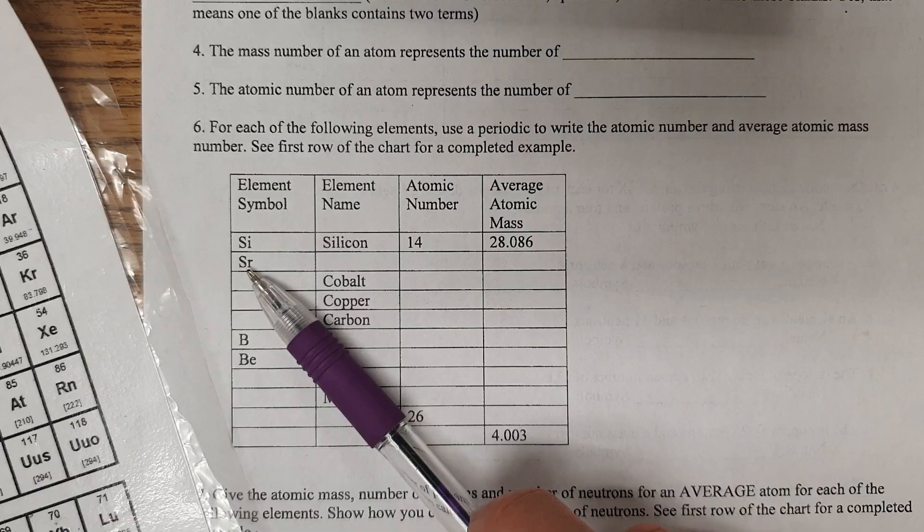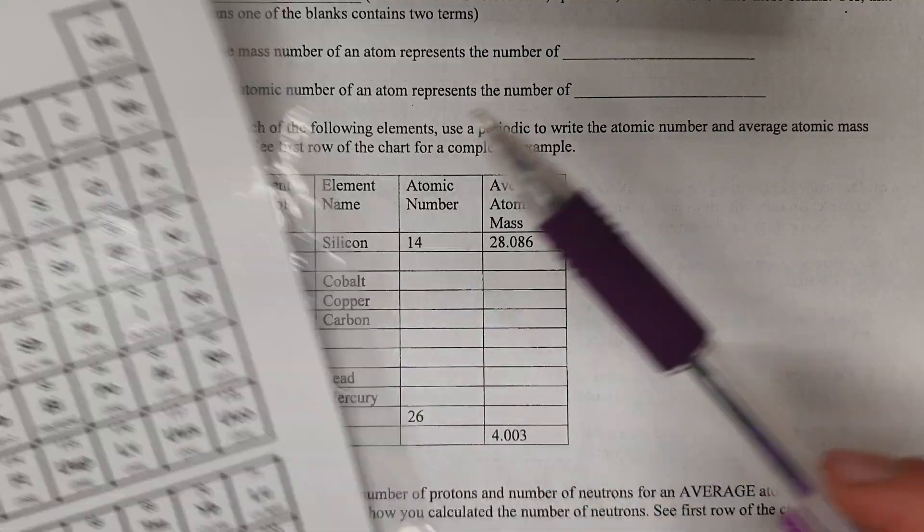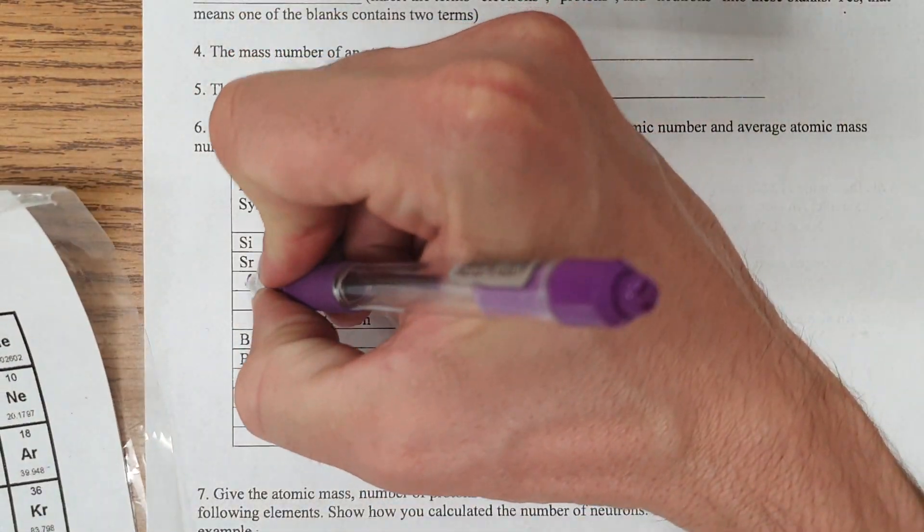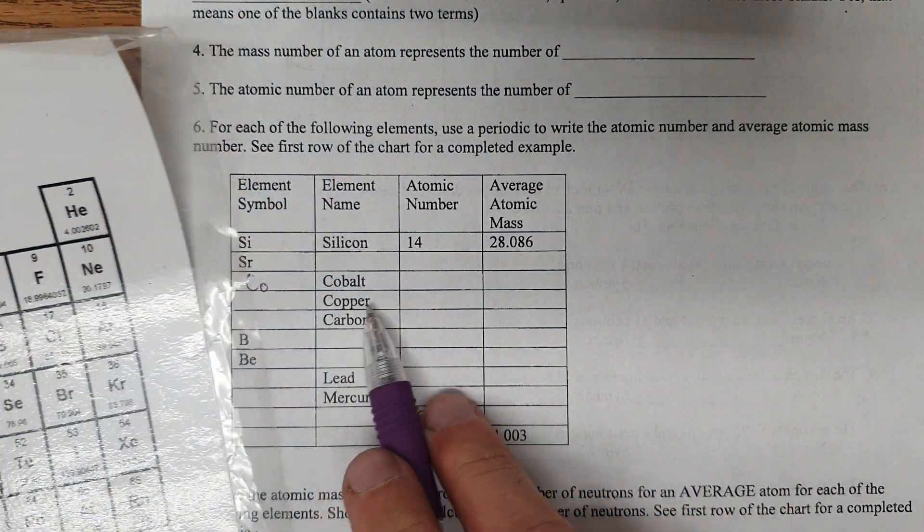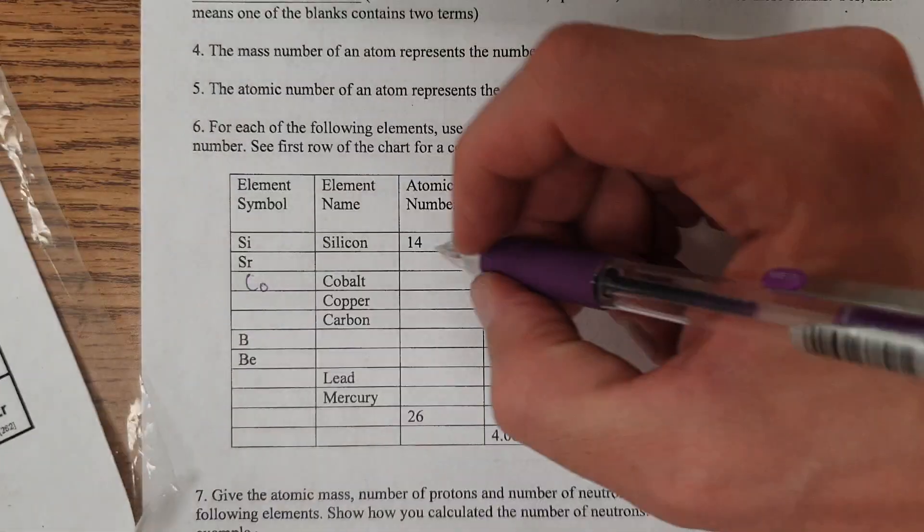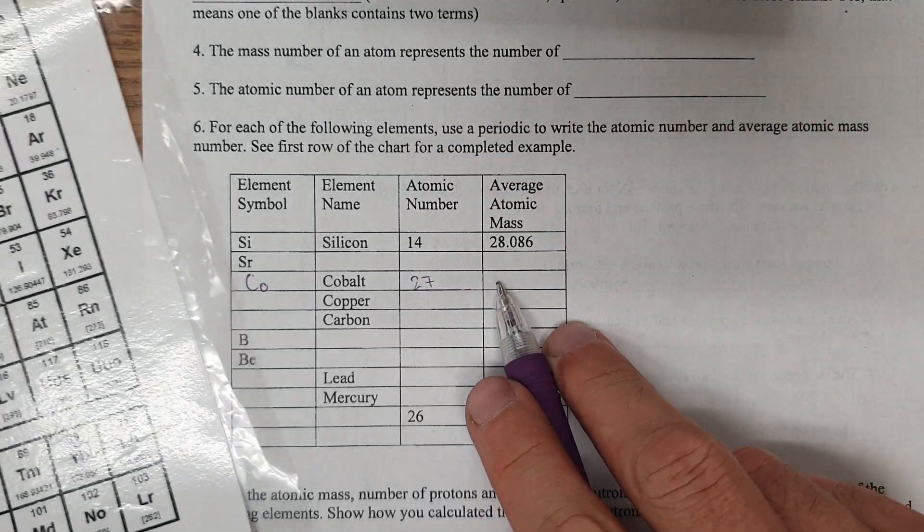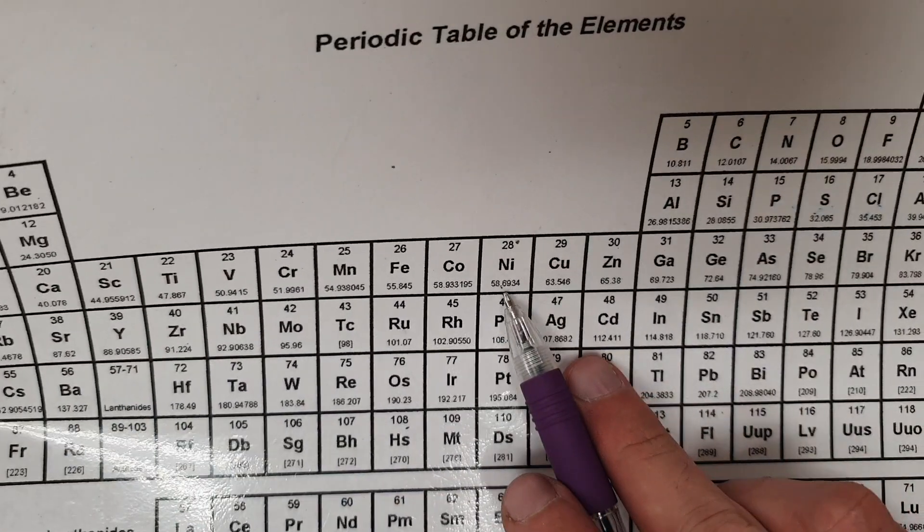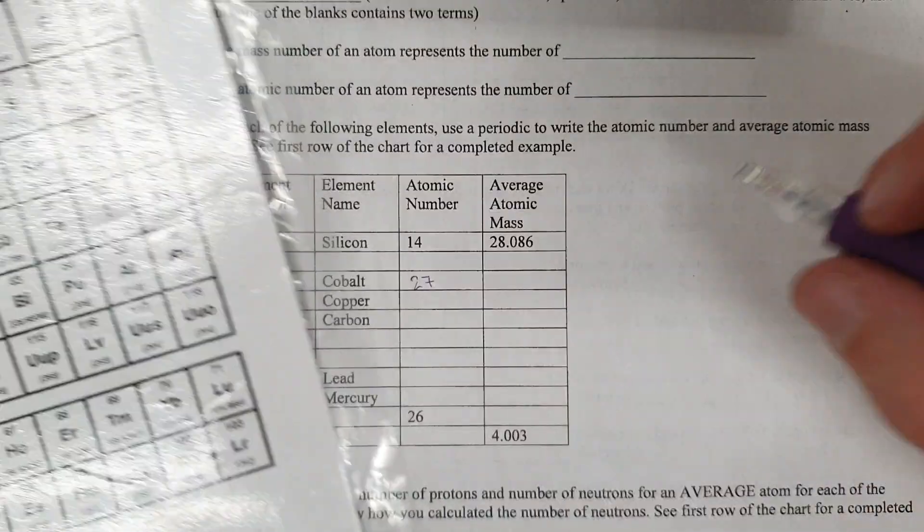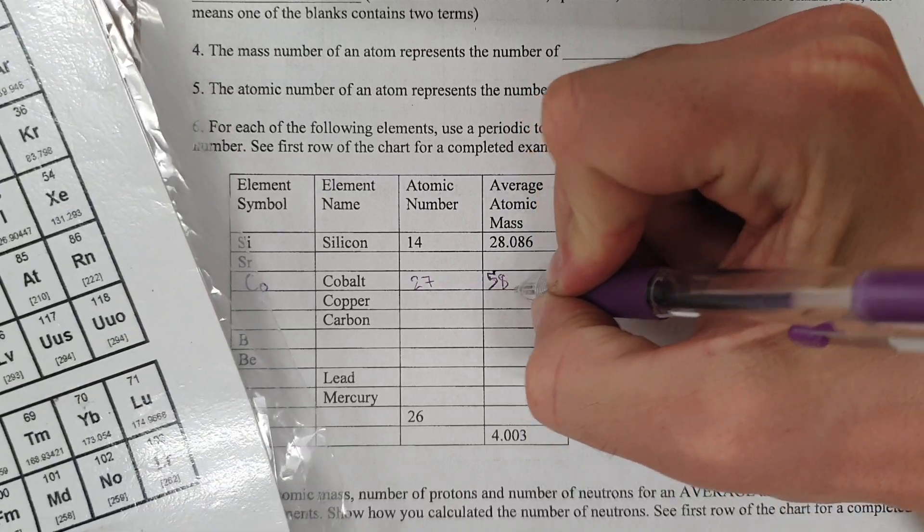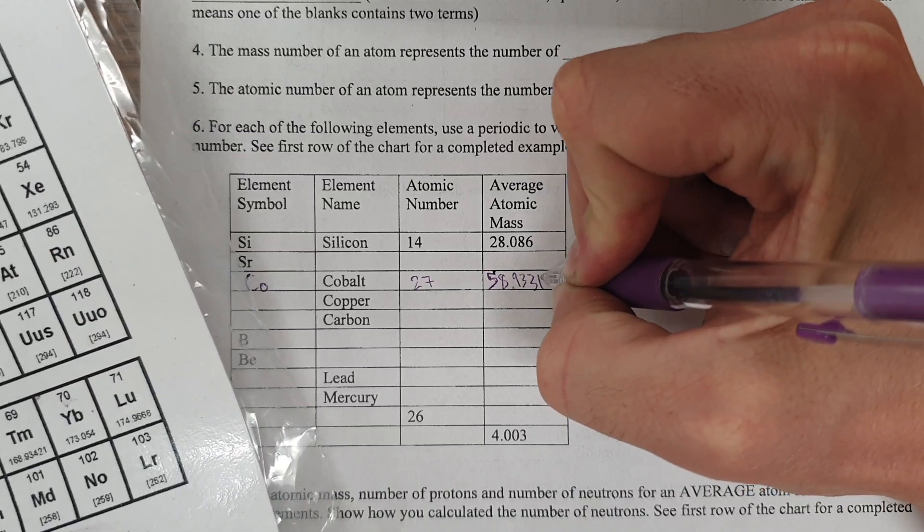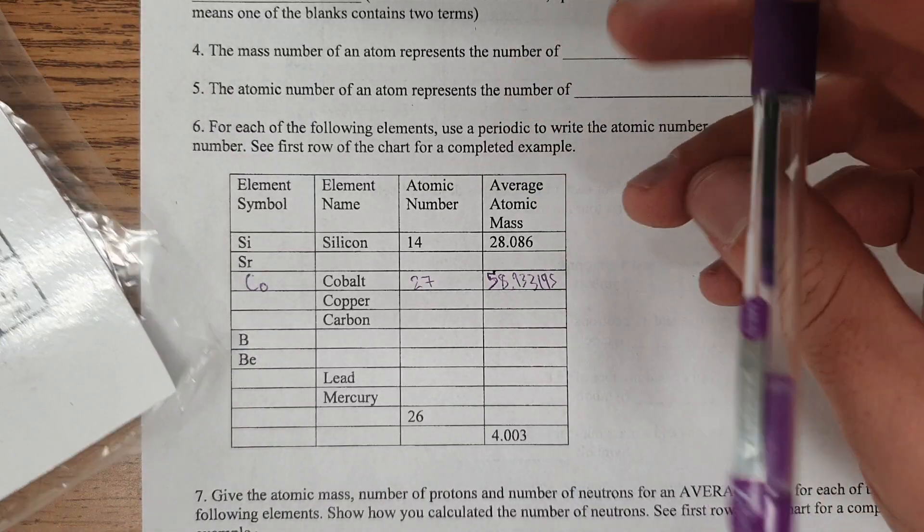An example further down, maybe, let's just jump down to do cobalt. Cobalt is this one right here. CO. Atomic number 27. And then you just write the average atomic mass, this number down here, 58.933195. We don't need to worry about units or anything for this particular example.